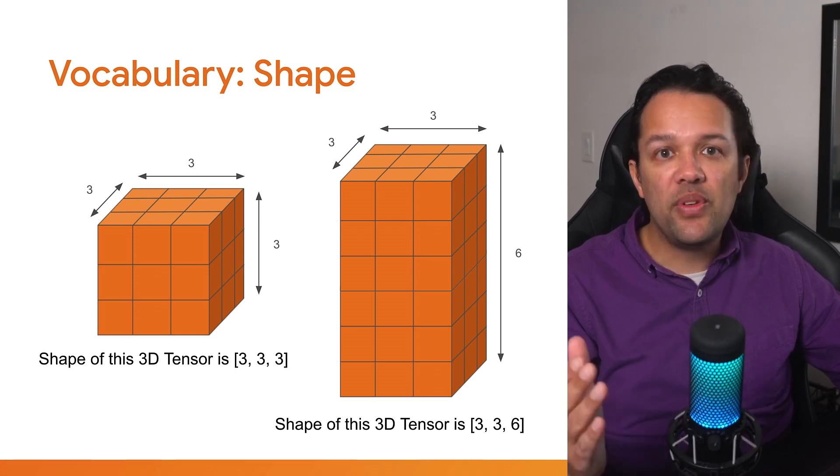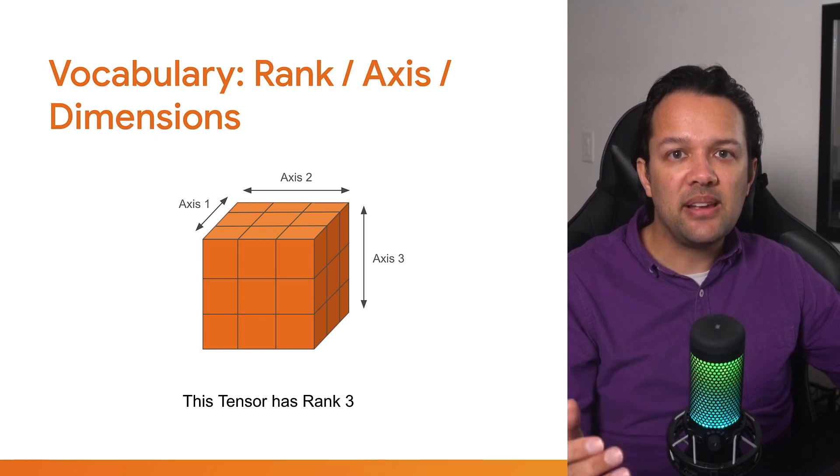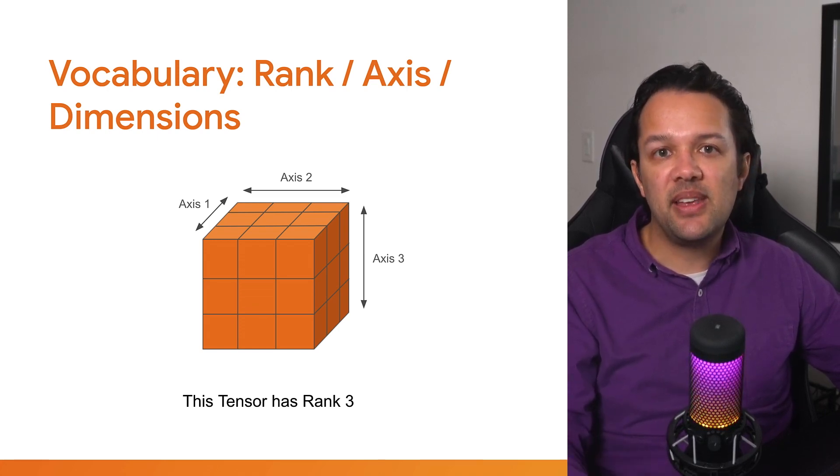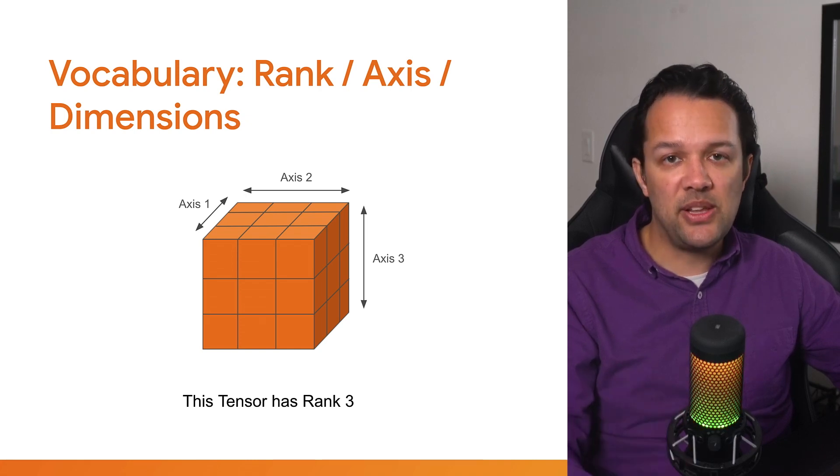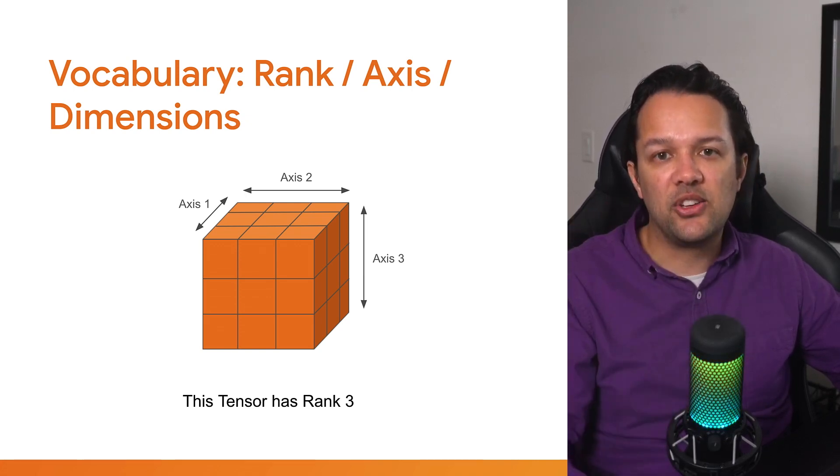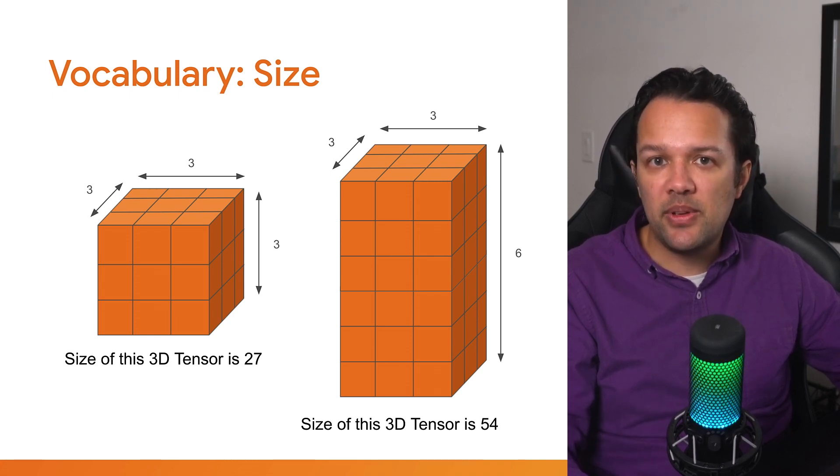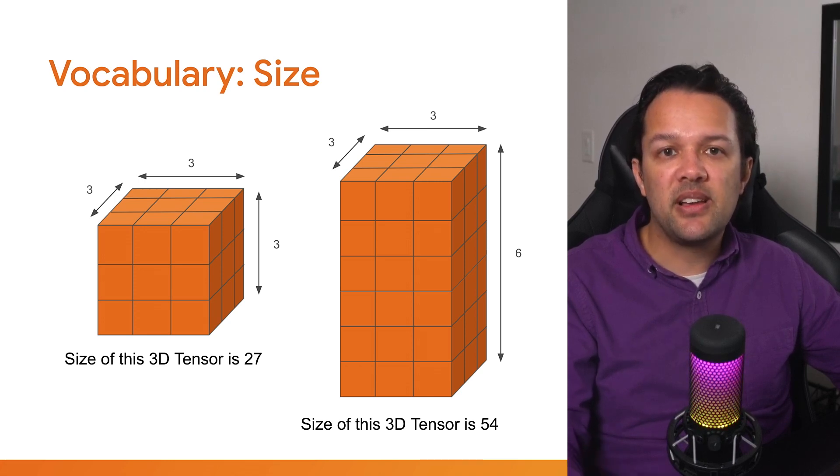Next, shape is the length, or the number of elements if you will, of each of the axes of the tensor. In this example, you have three-dimensional tensors as you saw before. The shape for the tensor on the left would be 3x3x3, and on the one on the right, which is also a three-dimensional tensor, its shape might be described as 3x3x6 using the same convention. Now, rank, as you saw before, is simply the number of axes that the tensor has, or the dimensions if you prefer to think of it like that. This tensor has three axes, so it has a rank of 3. Axes or dimensions can be individually called out too. For example, axes 2 in this visualization runs along the cube from the left to the right, as shown. Finally, size is just the total number of items in the tensor. If you know the shape of the tensor, you can multiply the numbers to get its size. This 3x3x3 tensor has a size of 27 on the left there, and the 3x3x6 tensor has a size of 54.